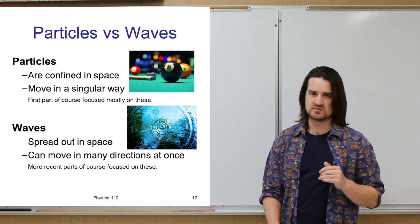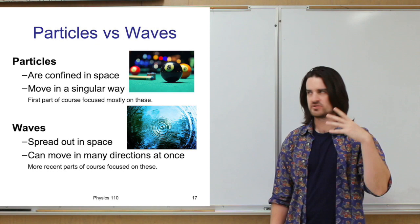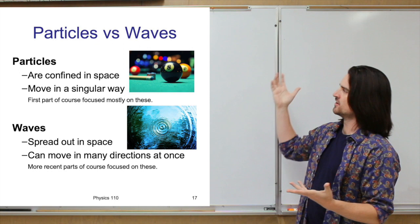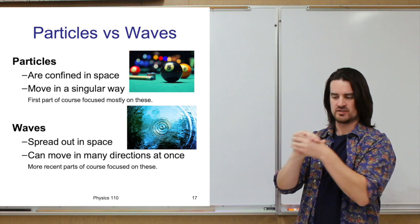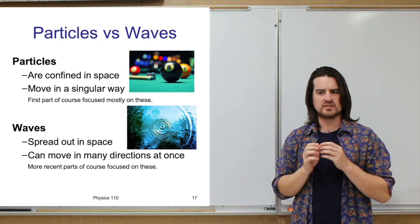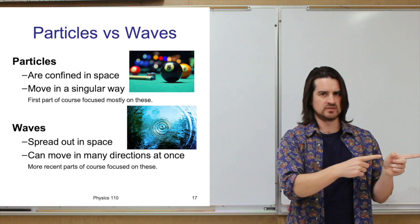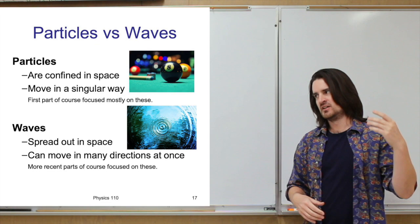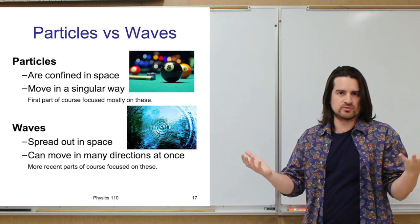Just to be clear about this: in our normal everyday life, we basically encounter two kinds of things — things that act like particles, like balls and billiard balls, and things that are like waves. Particles are essentially things confined to a space — a billiard ball takes up a certain amount of space, I can point to it, and it moves in one direction at a time. The first part of this course was mostly focused on things like particles — cars rolling down the road. A car is like a particle thing: it's confined and moves in one direction at a time.